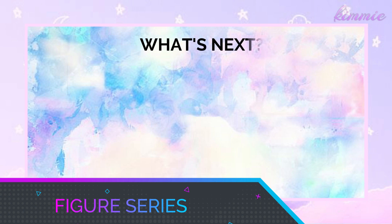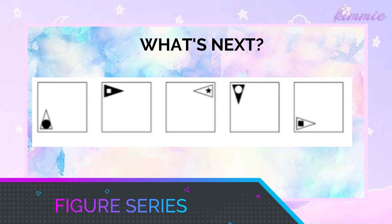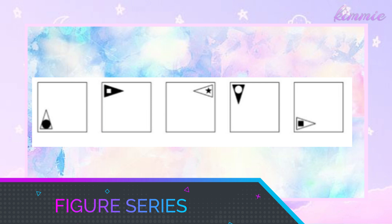Figure series is very simple because it's all about what's next — like what's the next figure. We have here an example picture. You can see there are 5 boxes and each box has a corresponding picture. What you need to do is to discover the pattern, look at what is changing, then determine what will be the next figure. In each box we actually have different triangles, and inside of the triangle there are different shapes.